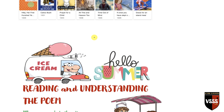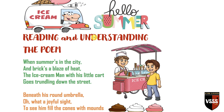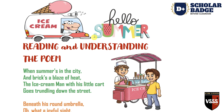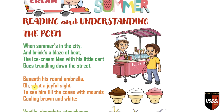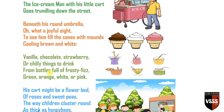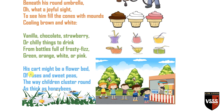Let's move on to the reading and understanding of the poem. First we will go through the complete poem, then understand it stanza by stanza. 'When summer's in the city and breaks a blaze of heat, the ice cream man with his little cart goes trundling down the street. Beneath his round umbrella, oh, what a joyful sight, to see him fill the cones with mounds cooling brown and white. Vanilla, chocolate, strawberry, or chilly things to drink, from bottles full of frosty fizz, green, orange, white, or pink. His cart might be a flower bed of roses and sweet peas, the way children cluster round as thick as honey bees.'